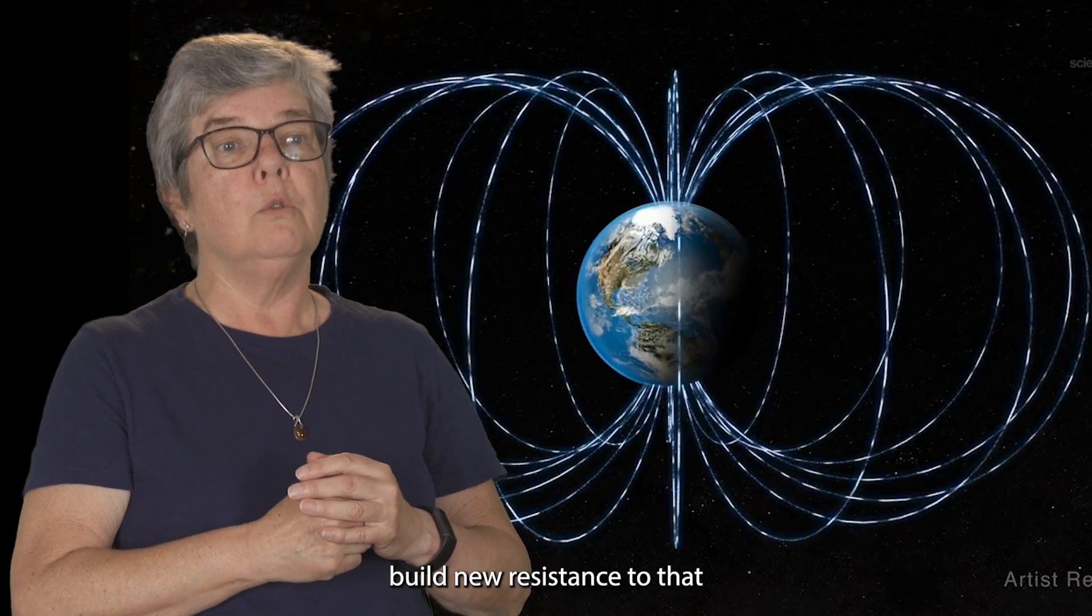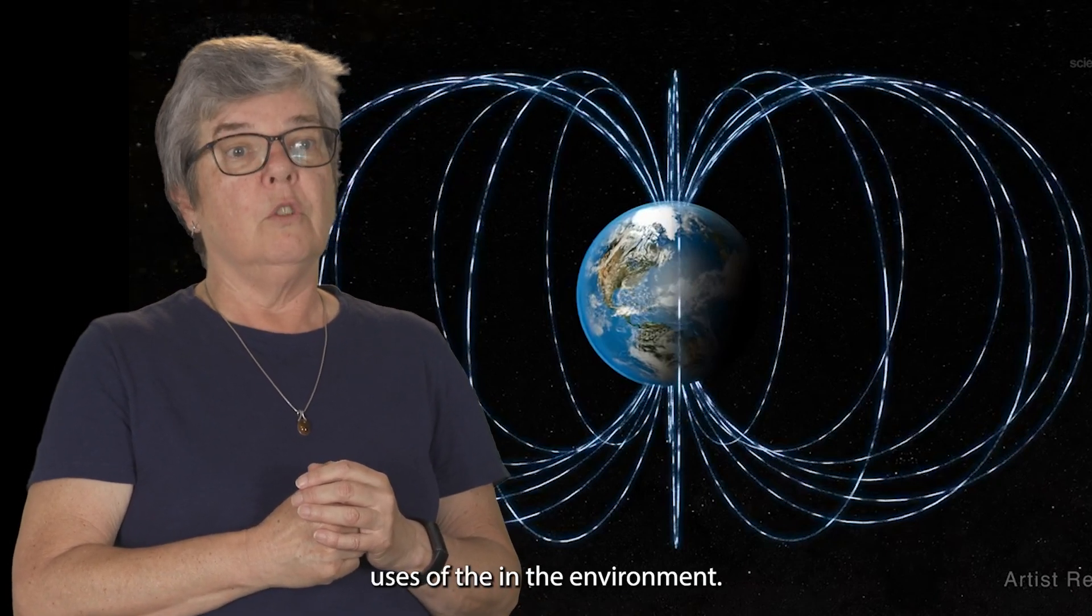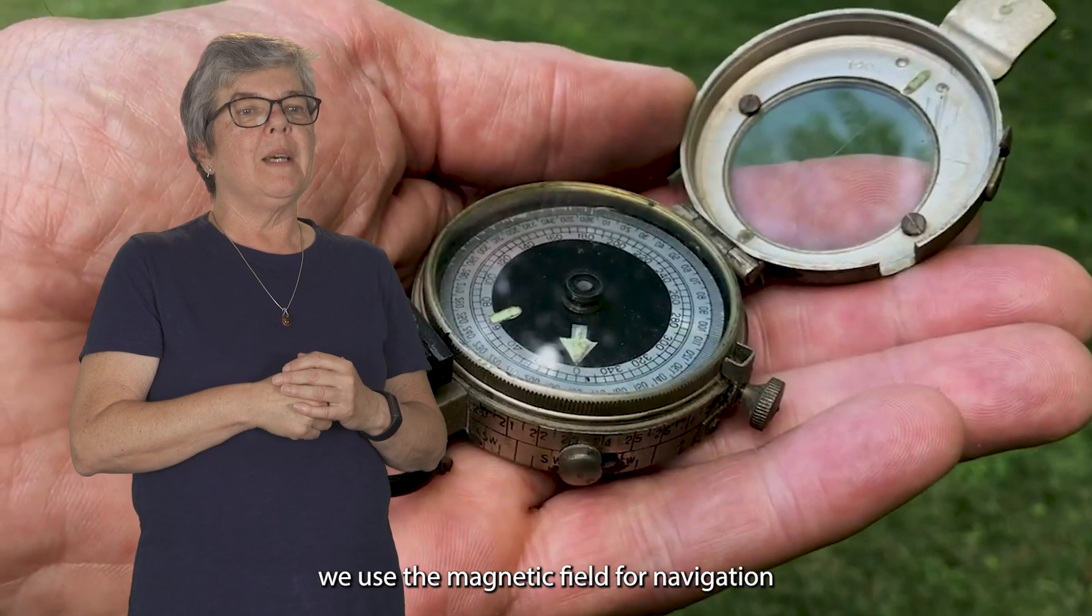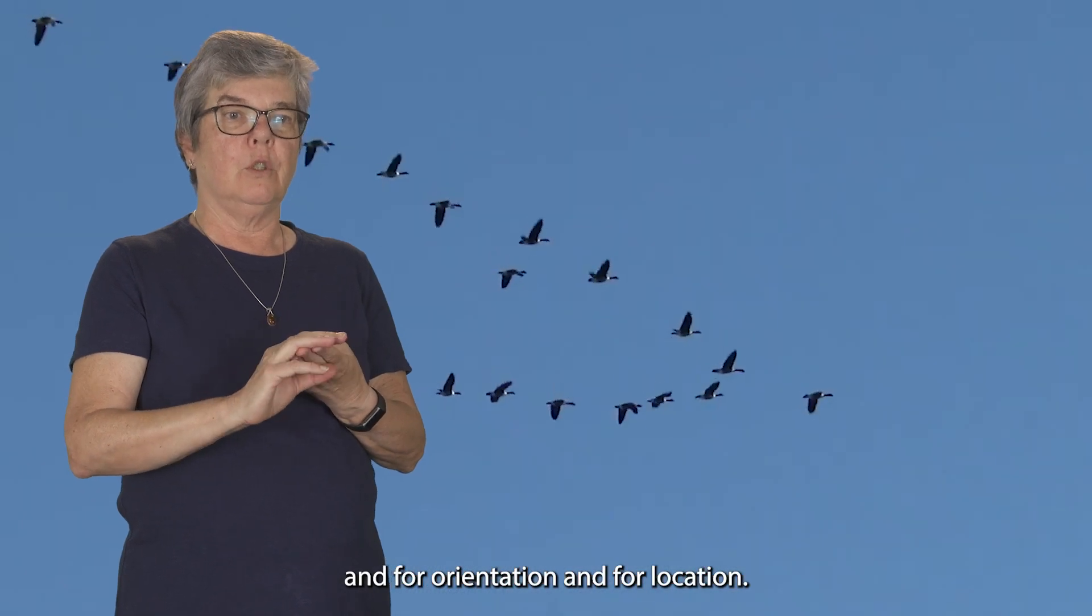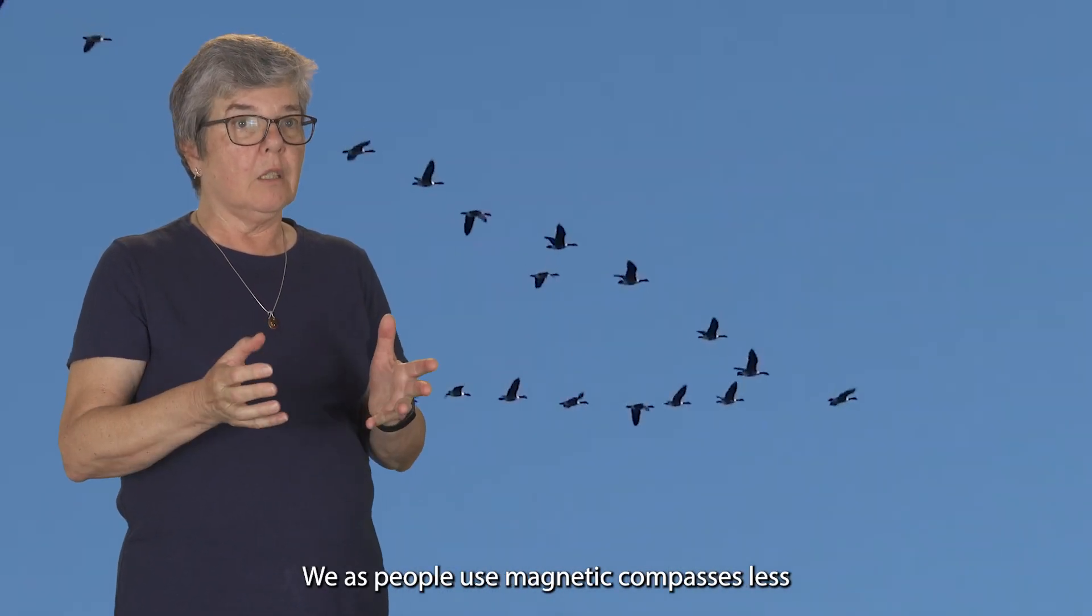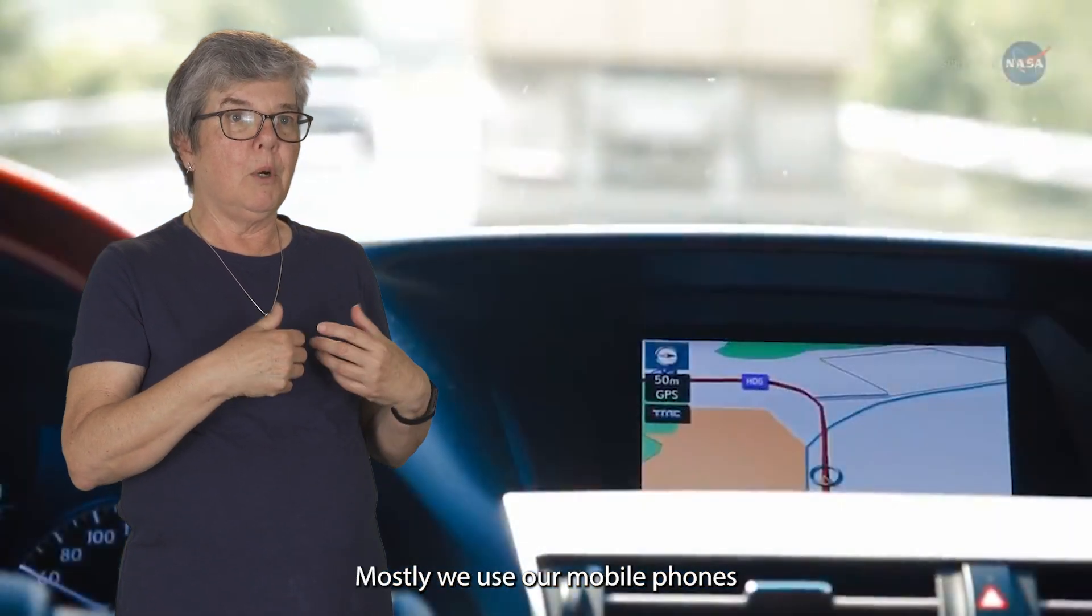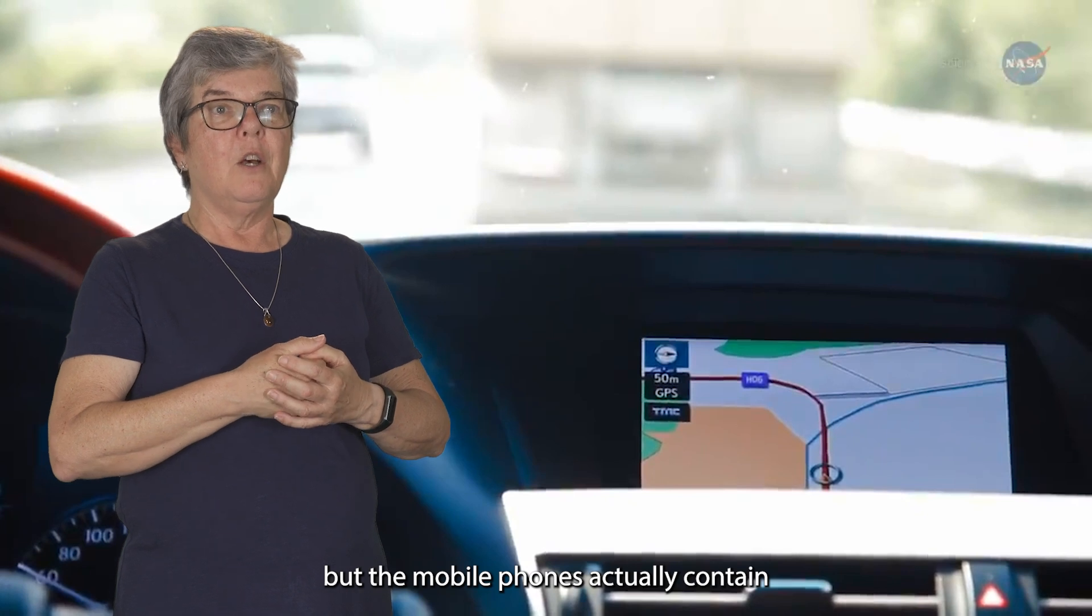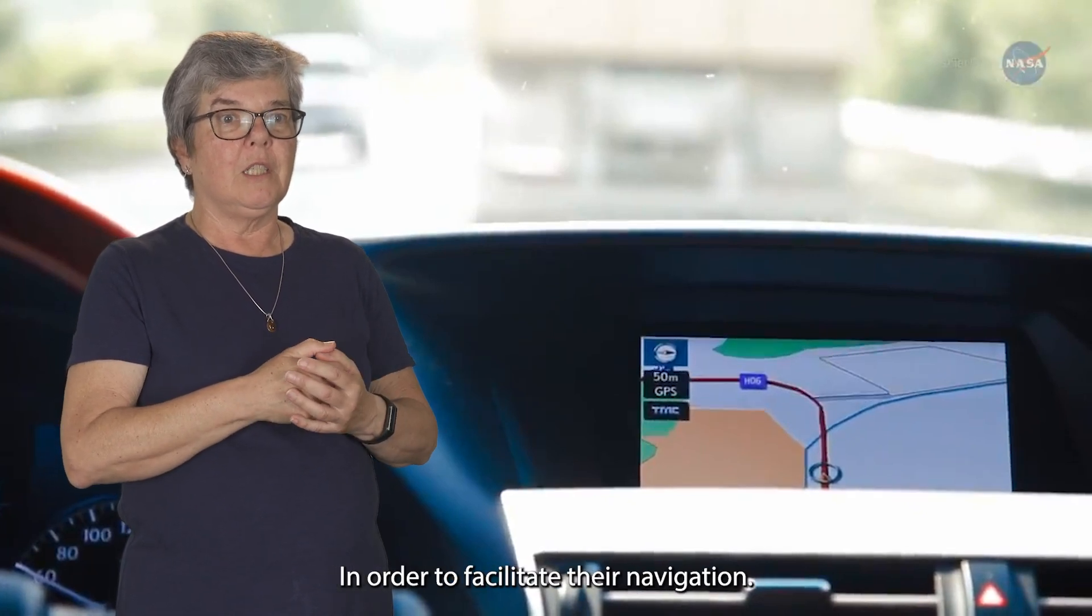So many life forms use the magnetic field for navigation and for orientation and for location. We as people use magnetic compasses, less so now than we used to. Mostly we use our mobile phones for navigation, but the mobile phones actually contain information about the magnetic field in order to facilitate that navigation.